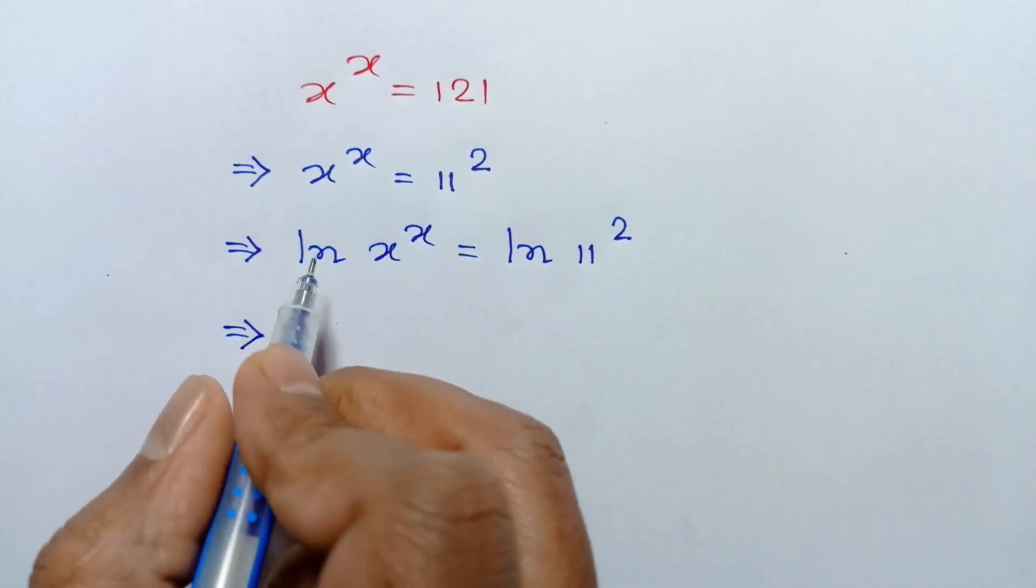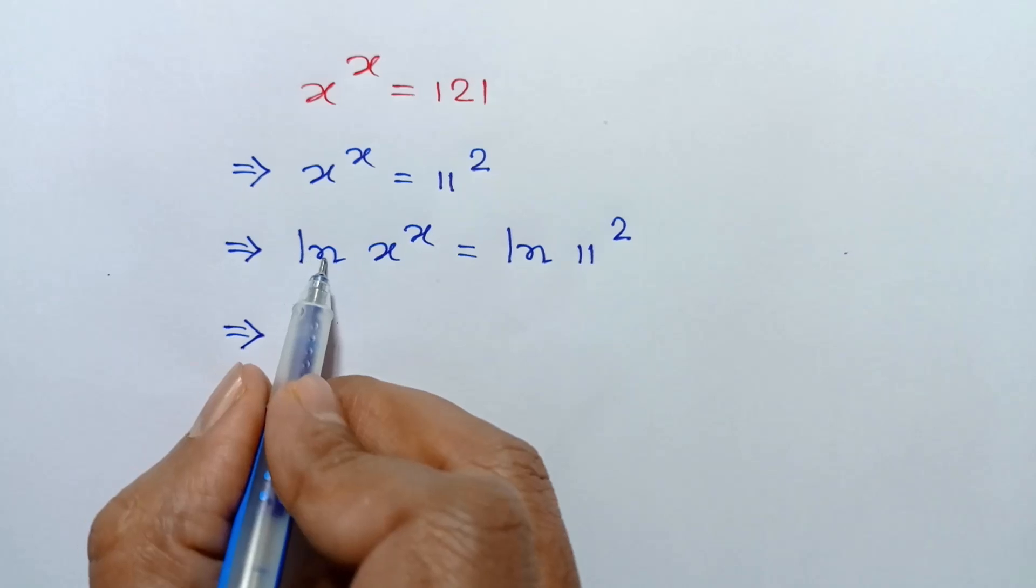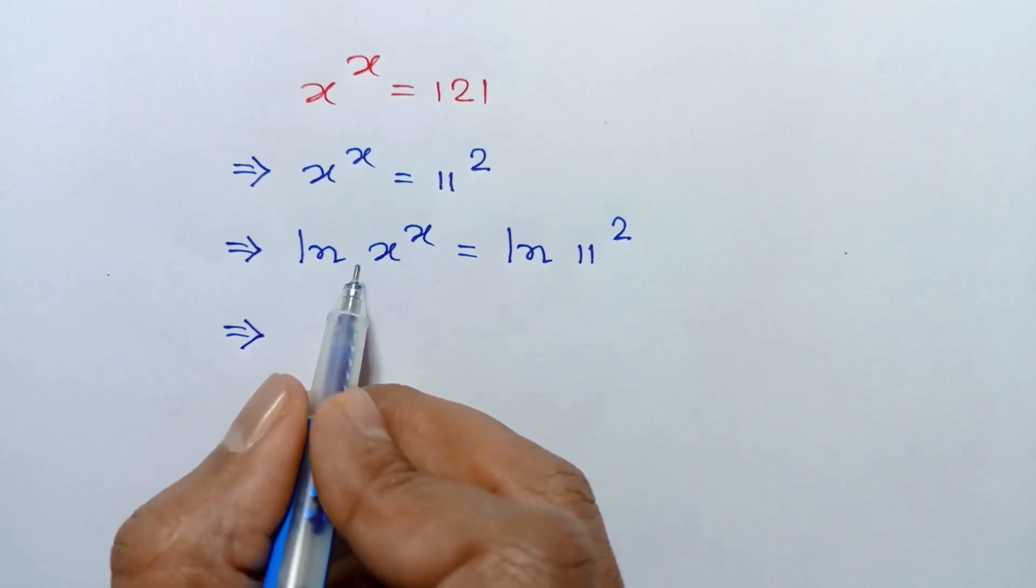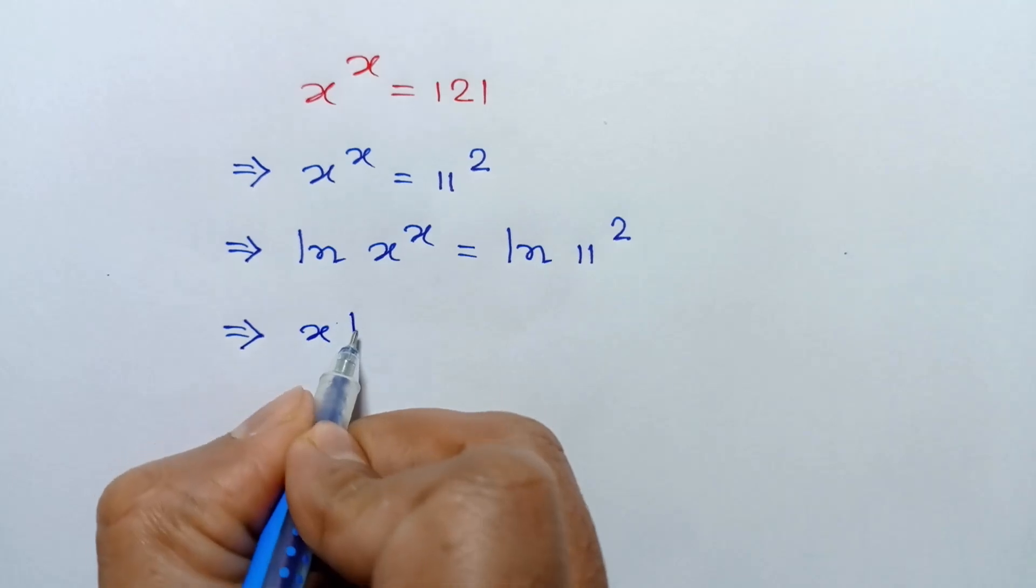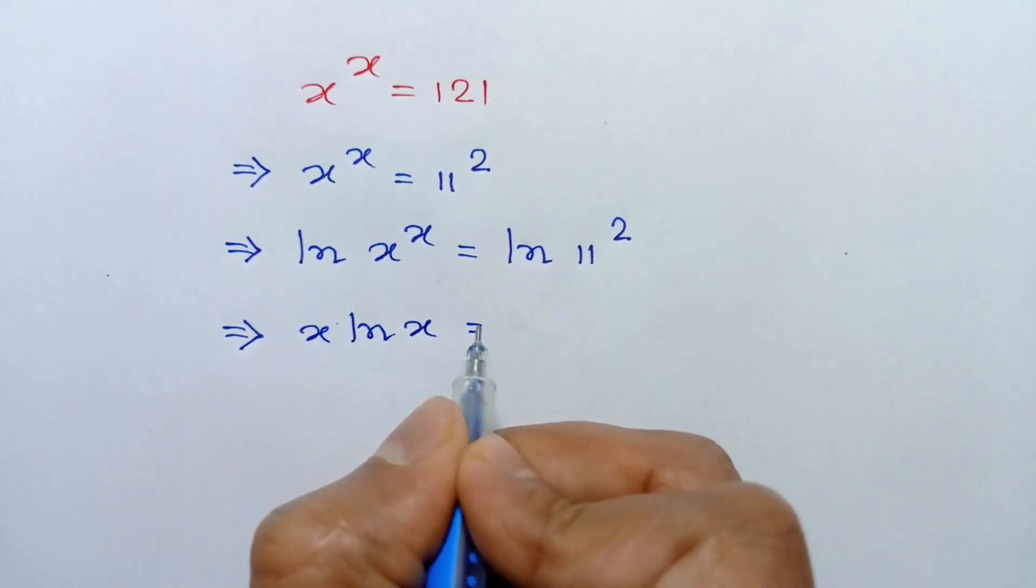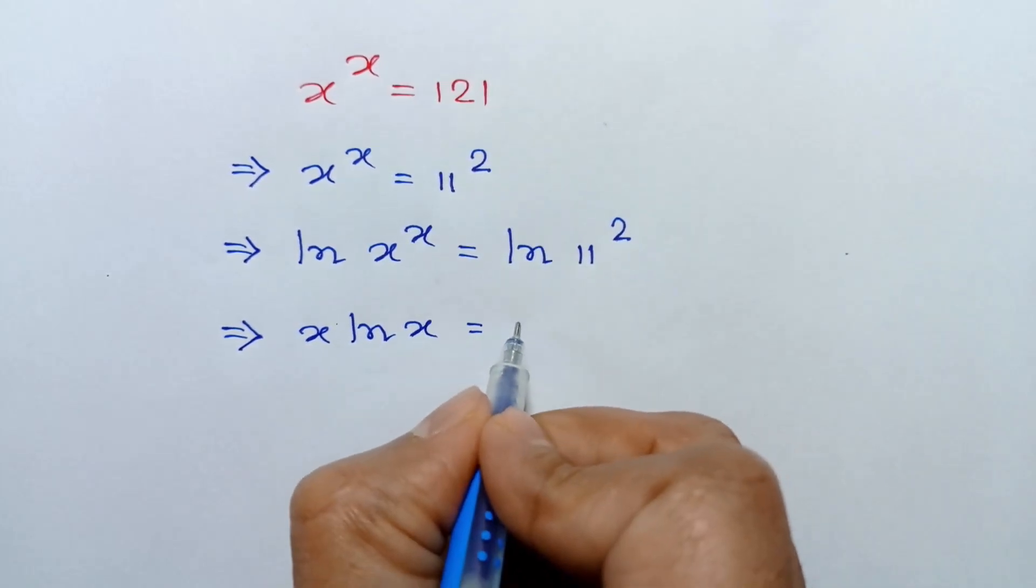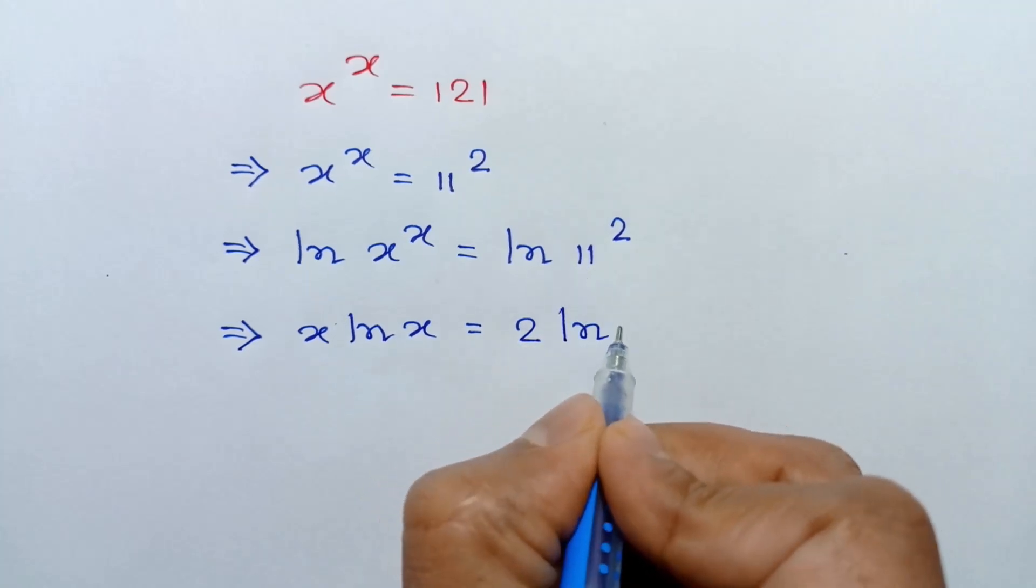According to the law of logarithm, we can write ln x to the power x as x ln x equals 2 ln 11.